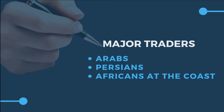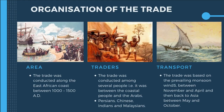The major traders in this trade were Arabs, Persians, and the Africans at the coast. Essentially, the foreigners — Arabs and Persians — were in contact with Africans at the coast, growing the Indian Ocean trade. The trade was conducted along the coast of East Africa between 1000 and 1500 AD.